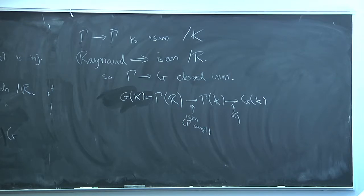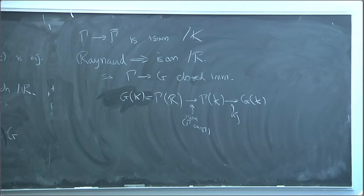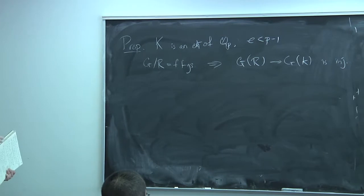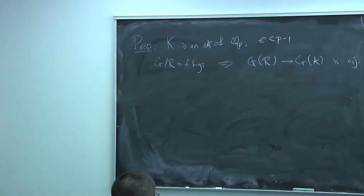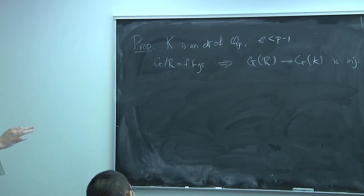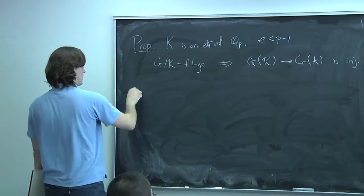Let me show an example of how this can fail when you don't have the ramification inequality. First note that this map doesn't have to be surjective. When N was prime to the order of the residue field, we said the map was an isomorphism. In the low ramification case, it's injective but not necessarily surjective.